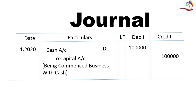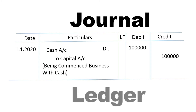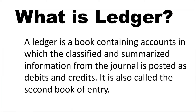A cash account debited to capital — that gives us a debit side and credit side. What is a ledger? A ledger is a book containing accounts in which the classified and summarized information from the journal is posted as debit side and credit side.